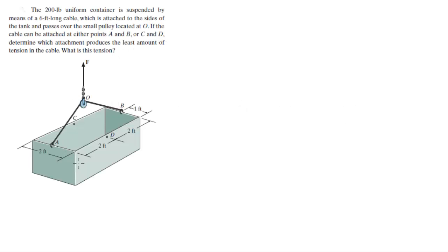Alright guys, let's do this problem where you have this 200 pound container suspended by this 6 foot long cable attached at AB. Now they tell you that it can also be attached at A and C and they want to know which one is better for the cable, in other words in which way of lifting it the cable has the least amount of tension.